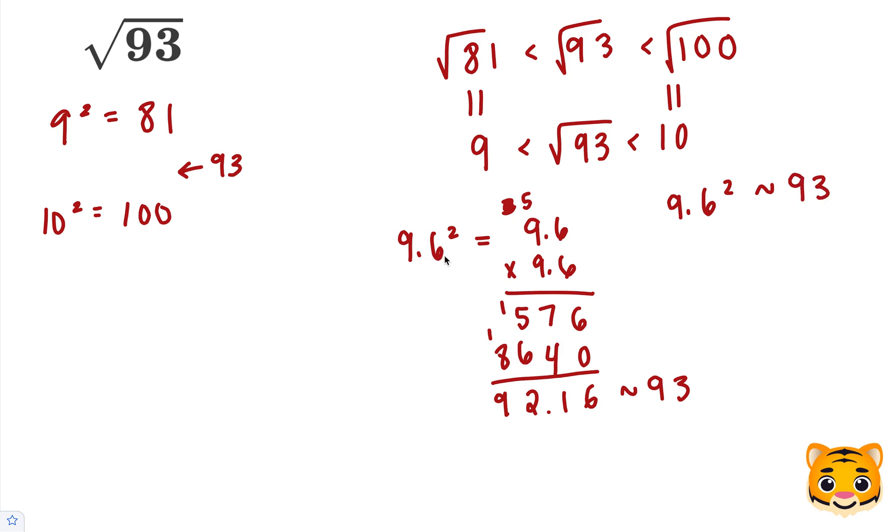While you could have tried 9.7 squared and see how close you get to 93, 9.6 squared is actually the closest you can get, so that's why we're approximating it to 93 here.